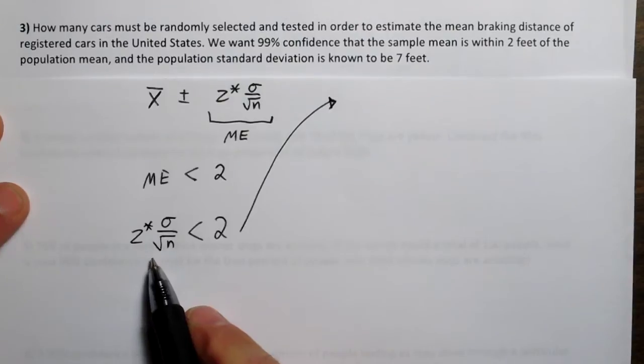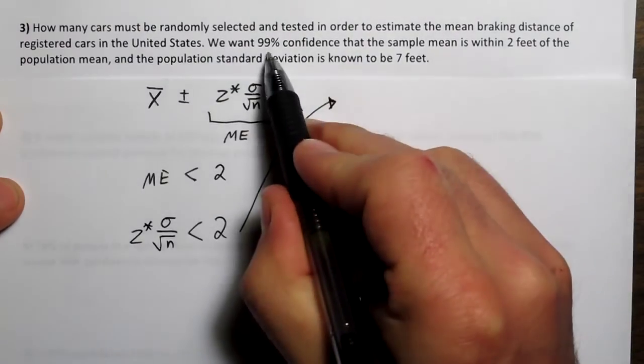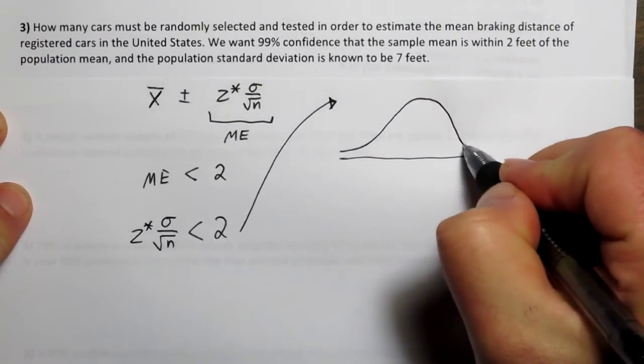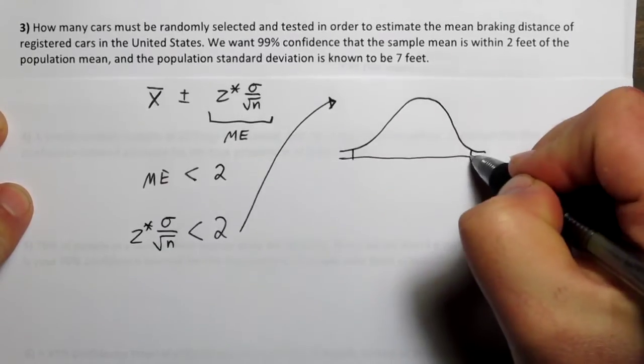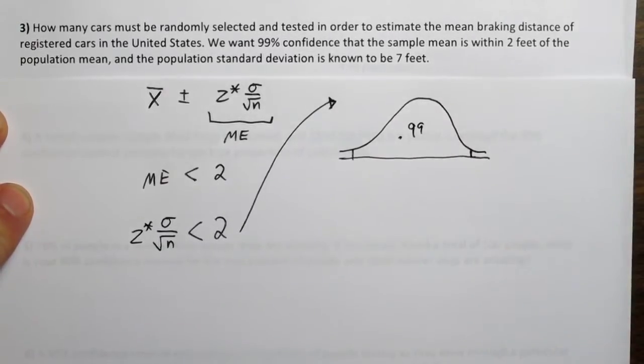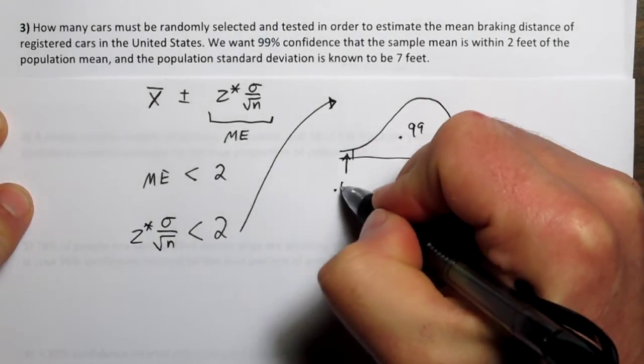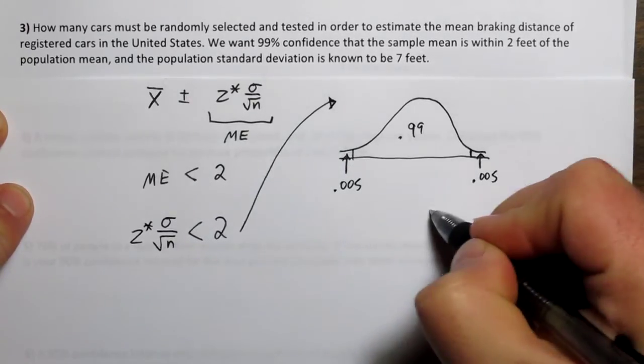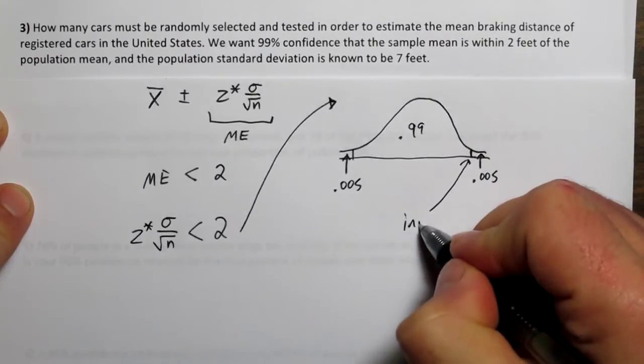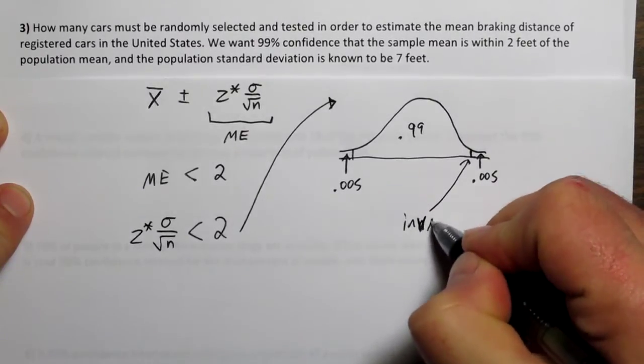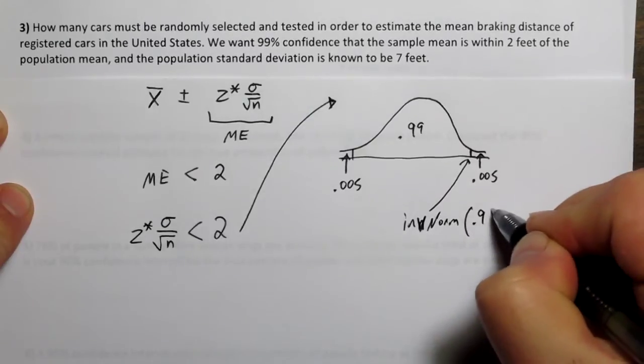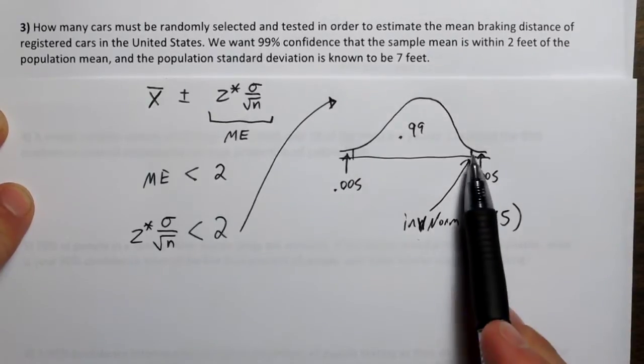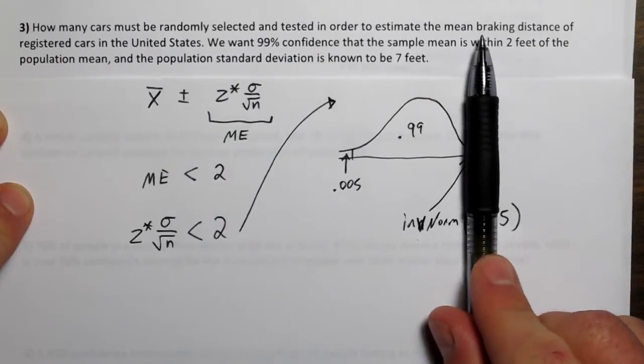Now let's start with this z star right here. Z star is based on this 99% confidence. If we have the normal distribution and we want to know the cutoff values that cut off the middle 99% of data, that would leave half a percent here and half a percent here. What we want to actually plug into our calculator is we want to use the inverse norm 0.99 plus this 0.005, because inverse norm tells you the area to the left of some cutoff value.